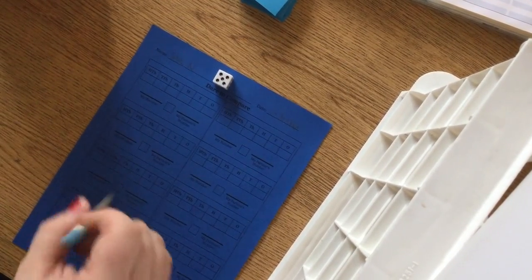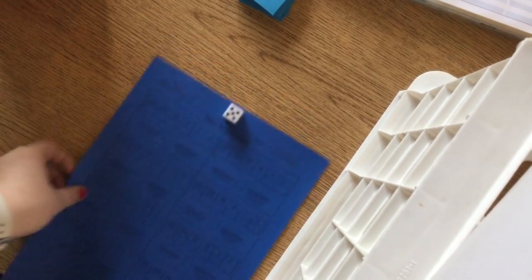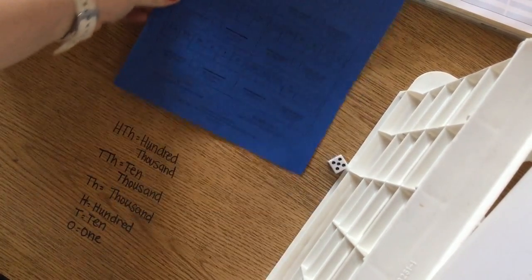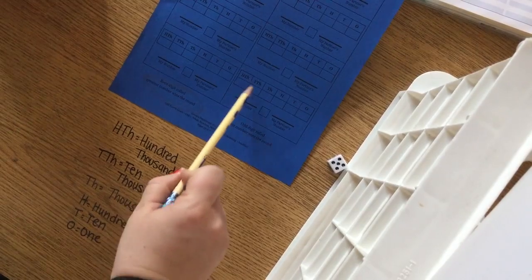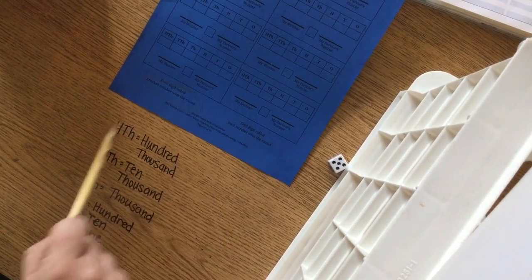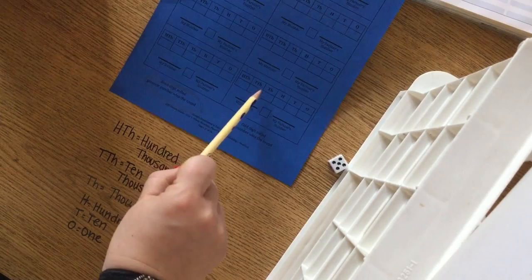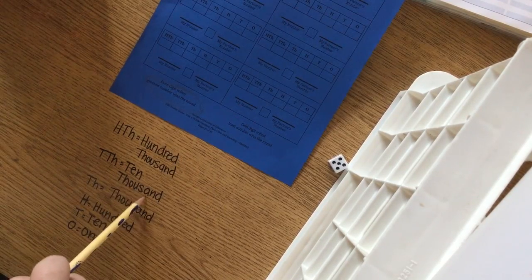So, what you want to think about is the columns up here. The columns are abbreviated. So, the HTH stands for 100,000. The TTH stands for 10,000.